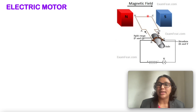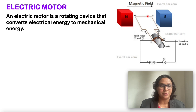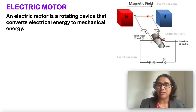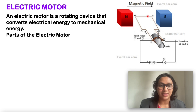What is an electric motor? An electric motor is a rotating device that converts electrical energy into mechanical energy. Before understanding the working of an electric motor, let us understand the different parts of the electric motor.